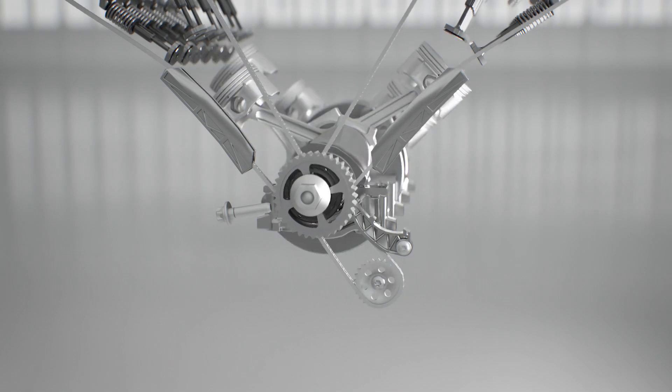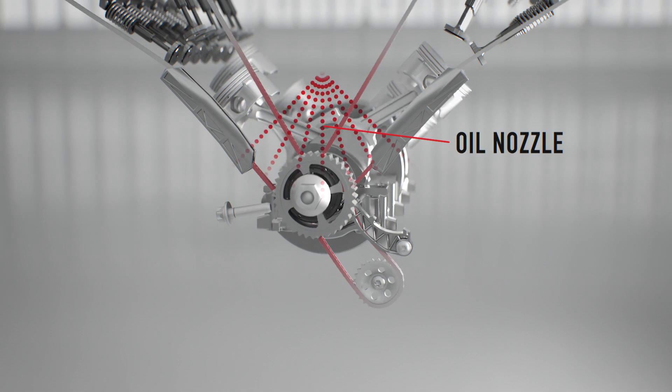The timing chain components and phasers are all lubricated by engine oil to maintain their life expectancy. Without lubrication, accelerated wear will occur and eventual failure.